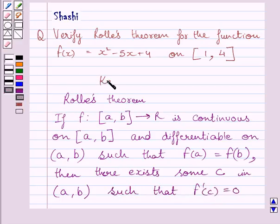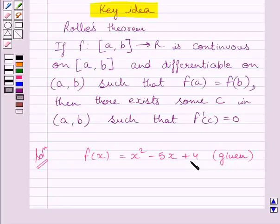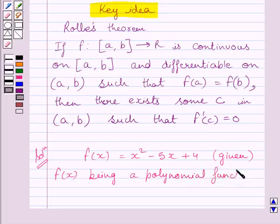This theorem is the key idea to solve the given question. Let us now start with the solution. See, now we have f(x) = x² - 5x + 4. Clearly we can see this is a polynomial function and we know every polynomial function is continuous. So we can write f(x) being a polynomial function is continuous in closed interval [1, 4].